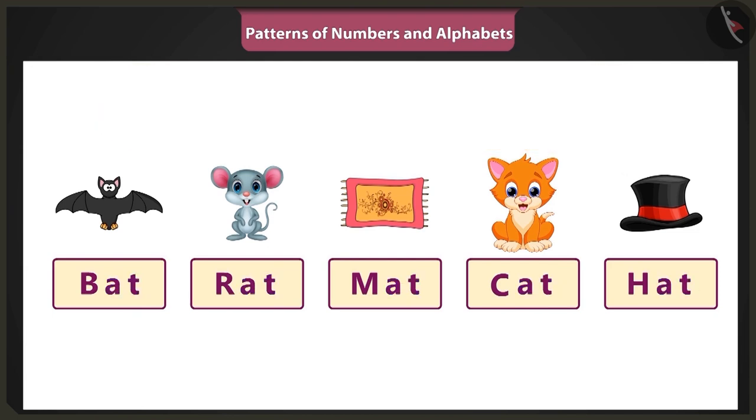Rightly said, Vinny, in all these words, the second alphabet is A and the third alphabet is T. So it does become a pattern of alphabets.